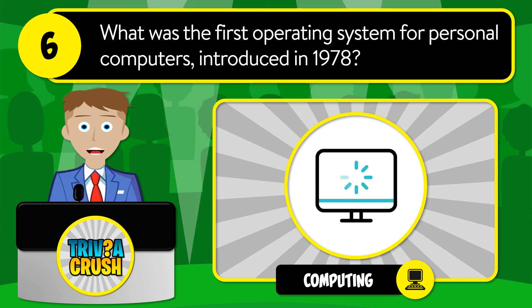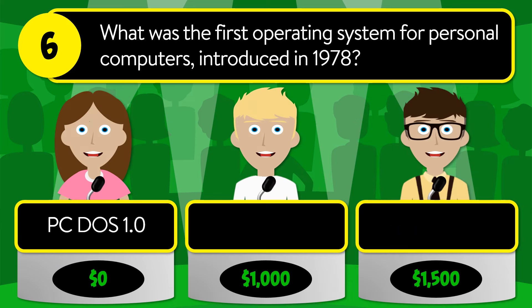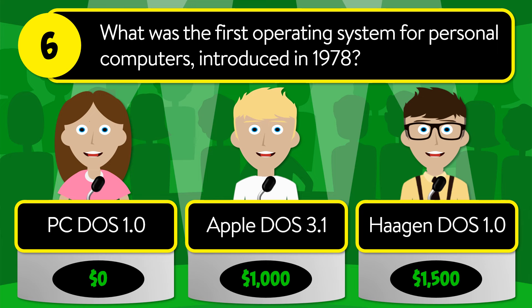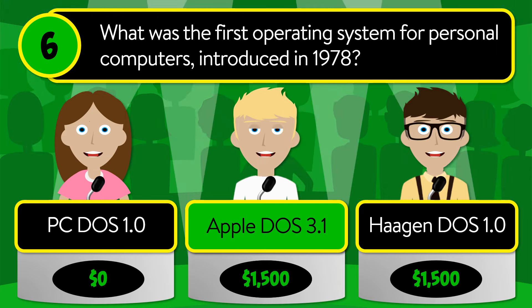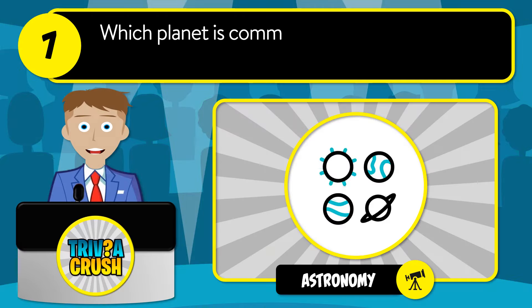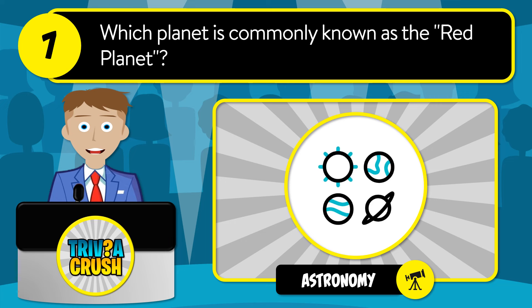Question number six: what is the first operating system for personal computers, introduced in 1978? Was it PC DOS 1.0, Apple DOS 3.1, or Hagen DOS 1.0? The correct answer is Apple DOS 3.1.